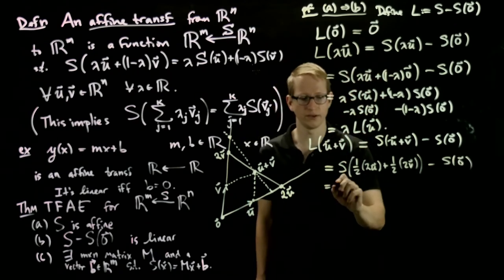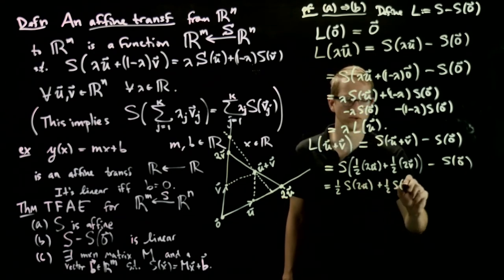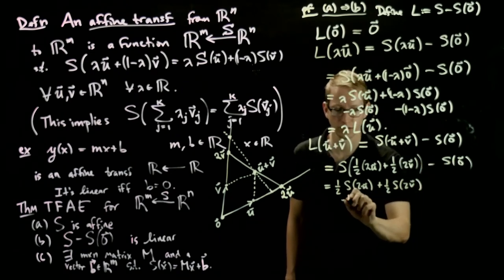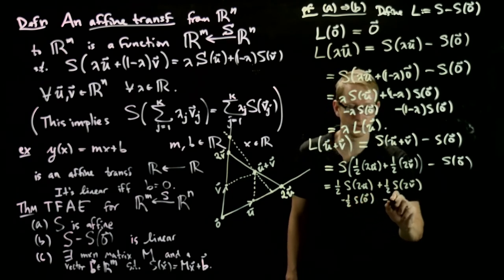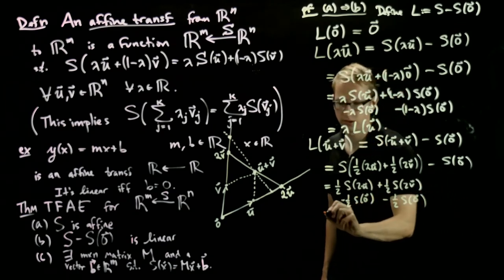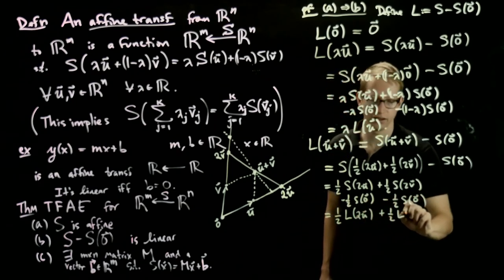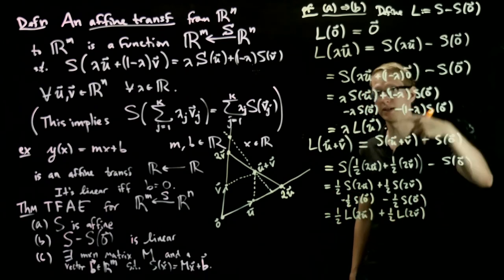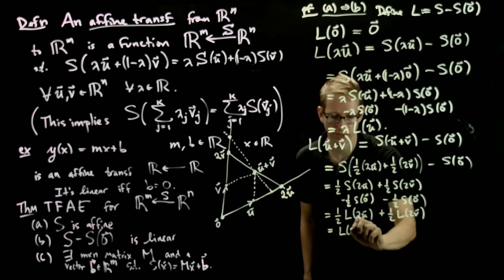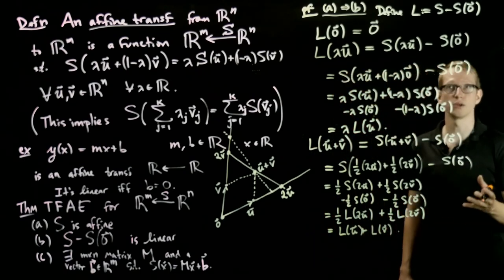And because this is an affine combination, we have ½s(2u) + ½s(2v). And now we can also subtract ½s(0) here minus ½s(0) again. And now ½ is a common factor here. So this gives us ½L(2u) + ½L(2v). But by the thing we just proved, we know that we can pull out scalars from L. So this gives us L(u) + L(v).